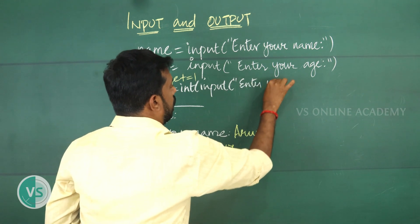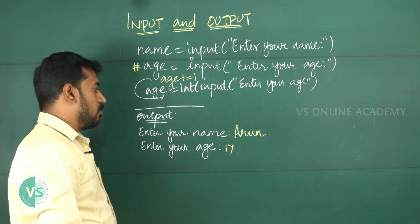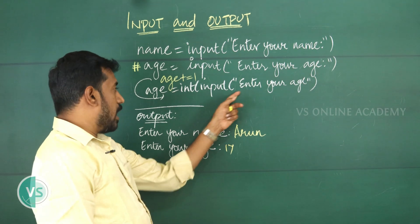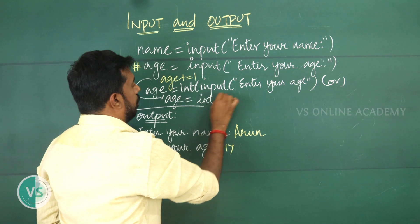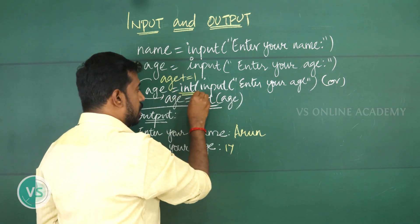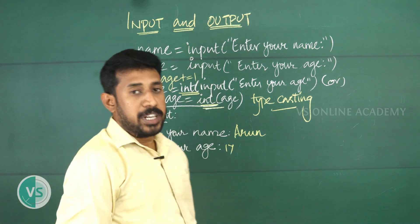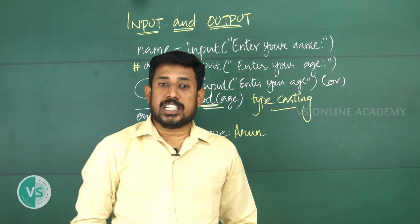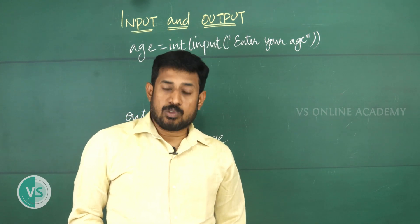After the typecasting statement, age += 1 works correctly: 17 + 1 = 18. Alternatively, you can write age = int(age) to convert the string to integer. Typecasting means converting one data type into another. This was covered in the previous video — many types of typecasting exist and will be explained further later.